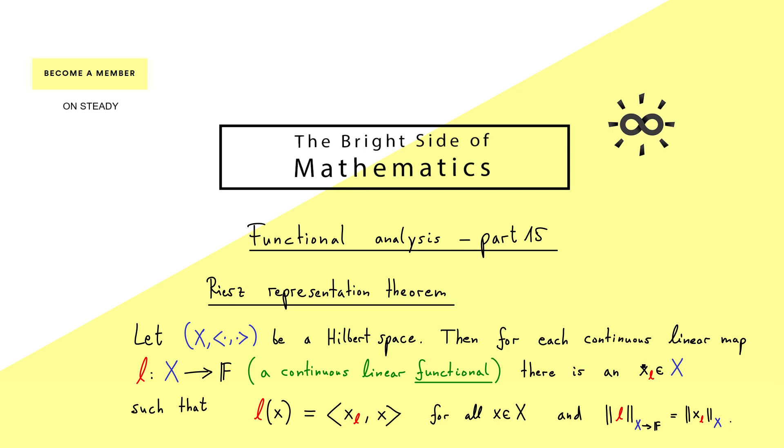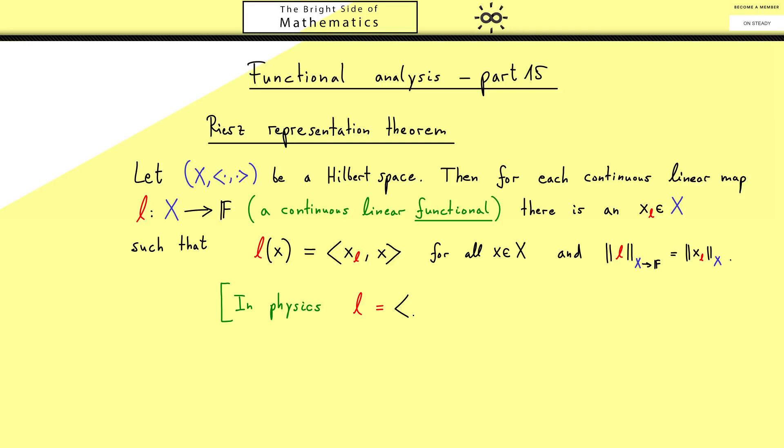No matter which crazy linear functional you choose as long as it's bounded you can simplify it through this inner product with a fixed vector xL and even the norm is saved here. So we can do a lot when we are working in a Hilbert space. In addition this theorem is the reason why in physics you often see a linear functional written with a vector psi in this sense. It simply means the same thing.